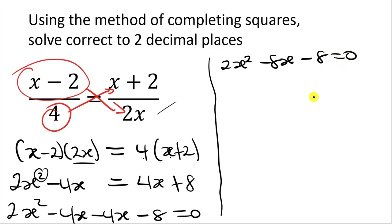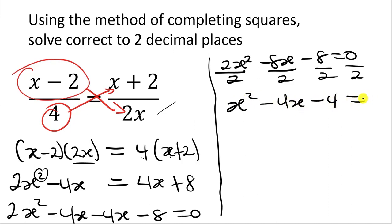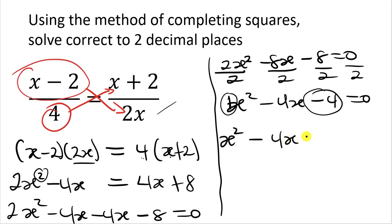We realize there is a common factor of 2, so we can reduce the equation by dividing every term by 2. That gives us x squared minus 4x minus 4 equals 0. Now we apply completing the square. The first step is to make sure the coefficient of the x squared term is positive 1 — it is, so that is satisfied. The second step: shift the constant term to the other side, giving us x squared minus 4x equals positive 4.